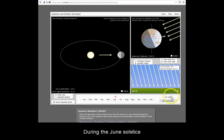During the June solstice, the northern hemisphere faces the Sun and northern latitudes have higher proportions of sunlight versus nighttime.